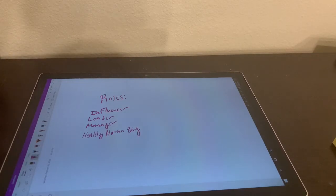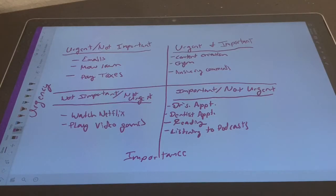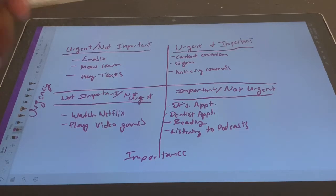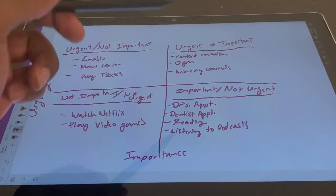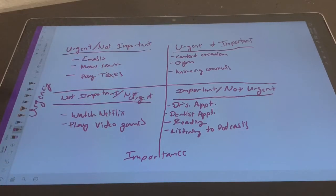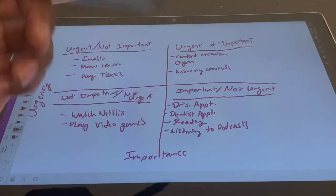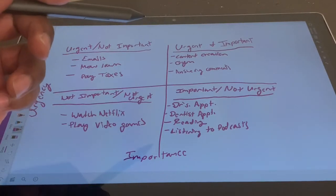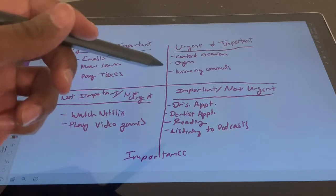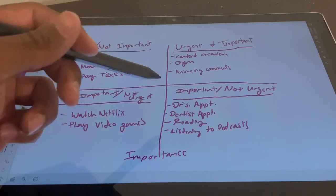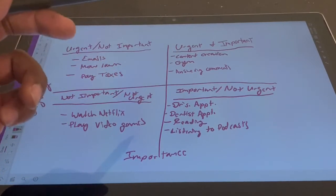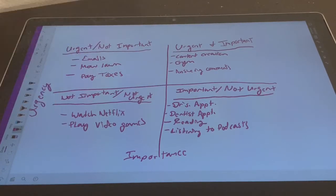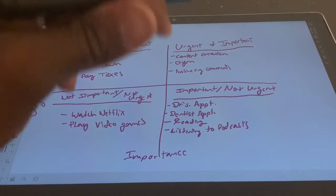So what does this look like in the prioritization matrix? The urgent and important quadrant is the most important of them all — quadrant number two. That's where you're going to spend most of your time. The way I fill this out: stuff I find urgent and important, like content creation — daily thing. Gym — daily thing. Answering comments — I need to get better about that, but that's urgent and important to me. Urgent and important is always the biggest priority.